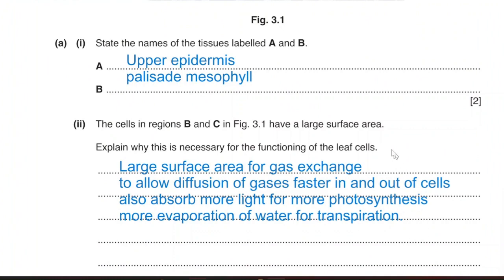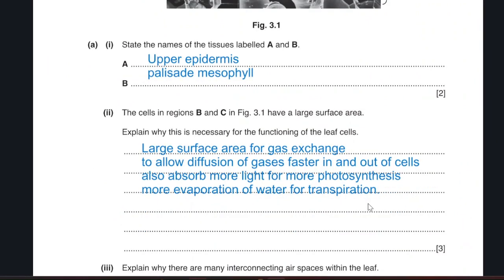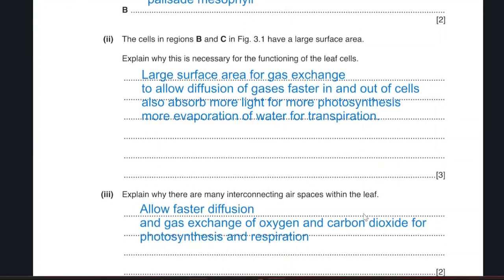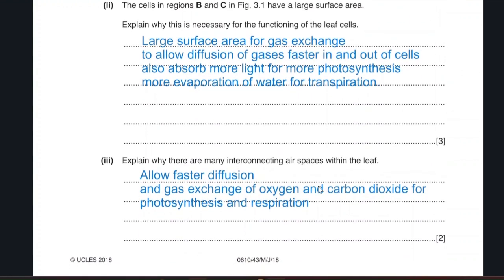The large surface area will help me in all these processes. Again, why there are many air spaces within the leaf. It is a very similar answer. It allows faster diffusion also. Gas exchange of oxygen and carbon dioxide for photosynthesis and respiration. Now, I focused more on the gas exchange. I wrote more details. As the spaces increase, it will take up more gases. So, you will have faster diffusion and more gas exchange for photosynthesis and respiration.